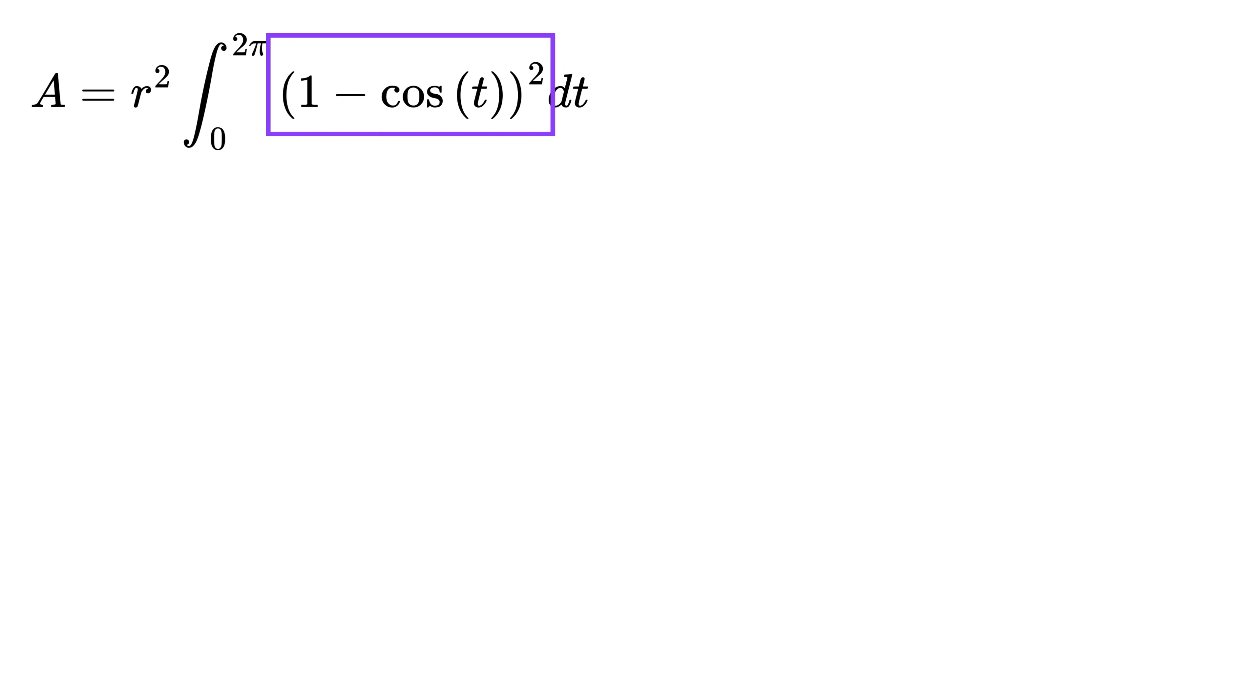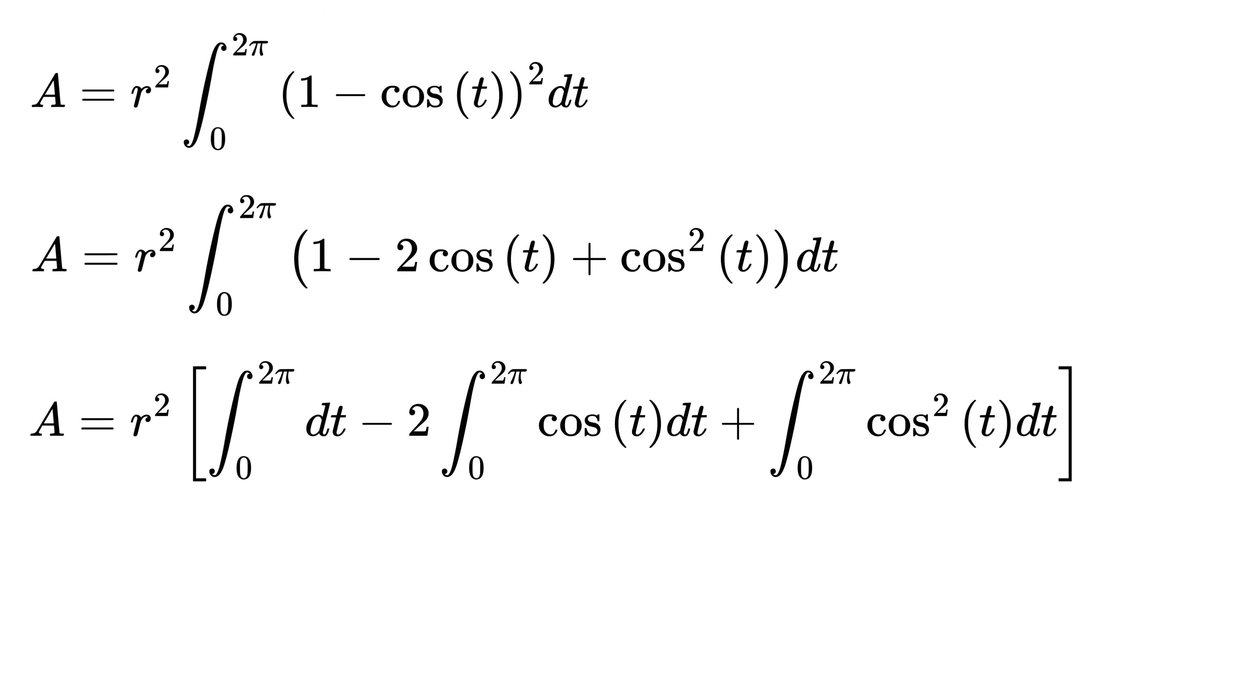Expand this to get this. Now separate all the terms like this. This integral is 2 pi, and integral of cosine from 0 to 2 pi is 0.